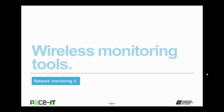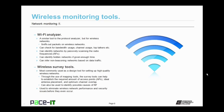Now let's move on to wireless monitoring tools, beginning with the Wi-Fi Analyzer. A Wi-Fi Analyzer is a similar tool to a protocol analyzer, but only for wireless networks. It sniffs out packets on wireless networks and gives you statistics on those packets. It can check for bandwidth usage, channel usage, top talkers, top listeners, and more — just like a packet sniffer can. Wi-Fi Analyzers can also identify networks by passively scanning the radio frequencies to determine where traffic is coming from.